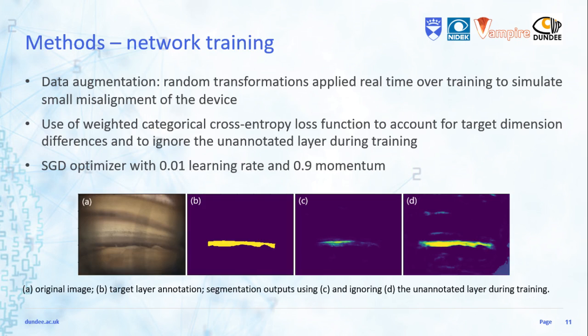Before being input to the network, images are resized to 240 by 320 pixels and rotated to a reference orientation to simplify the segmentation problem. Data augmentation is used to modify training images through small geometric transformations to simulate the effect of small device misalignment. The network is trained minimizing a weighted categorical cross-entropy loss function, where each target region is weighted by the ratio between its total pixel count and the number of pixels belonging to a reference region — the iris — in the whole training set.